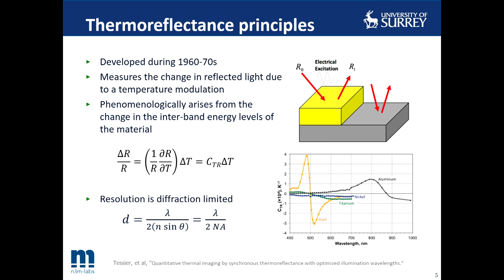Measurements of reflectance due to temperature variation have been widely used since the 1960s to study the band structures and dielectric response function in semiconductors. Only recently has the thermal reflectance imaging technique been developed for thermal measurements of micro-scale devices. The thermal reflectance technique captures the reflectance change due to a temperature variation from the surface of the device. The reflectance variation is illumination and material dependent, which is why a calibration is required to extract what we call the thermal reflectance coefficient. As seen in this figure, different materials exhibit a different thermal reflectance coefficient, and we always want to use the highest value to improve the sensitivity and temperature resolution of the system.